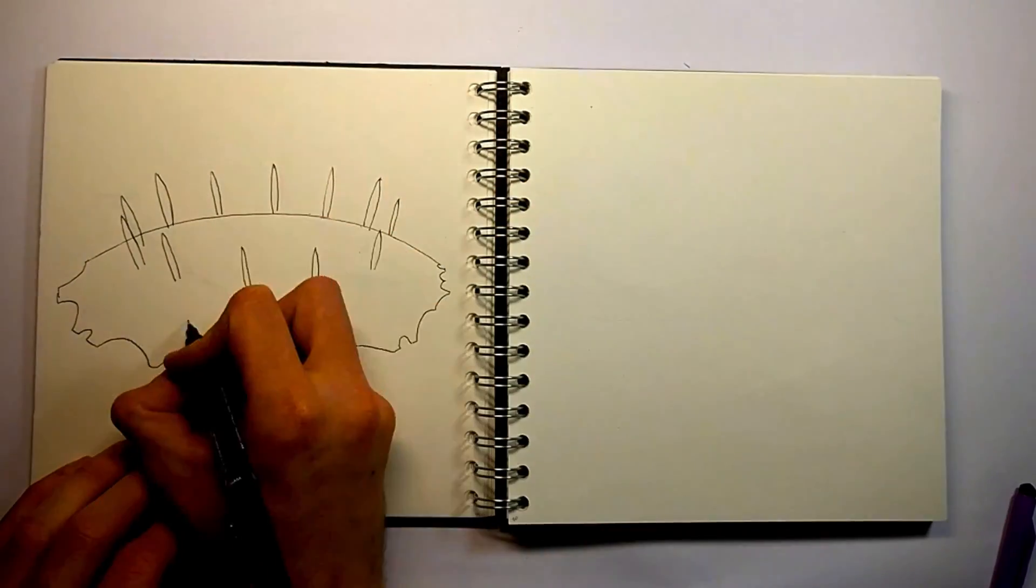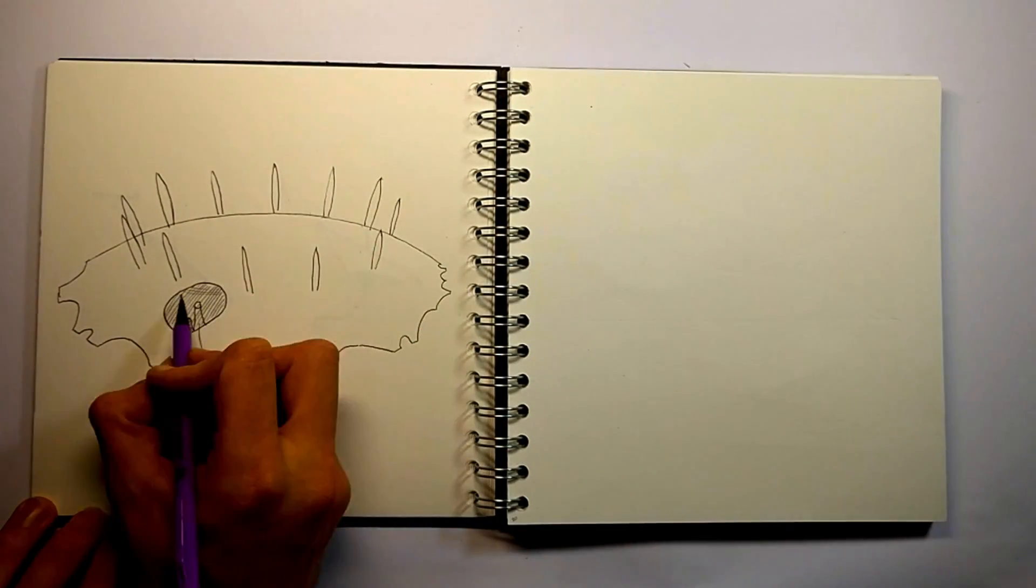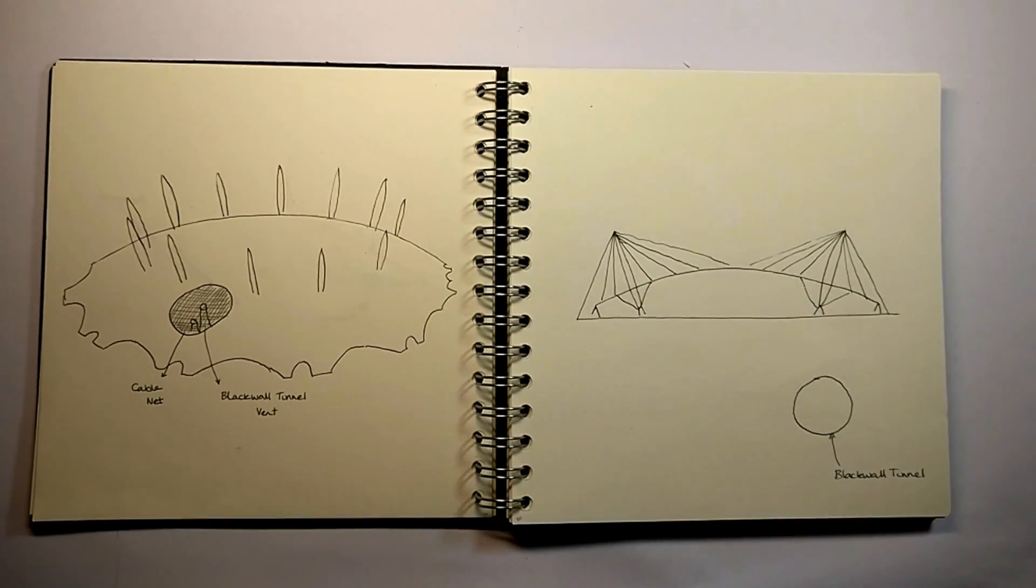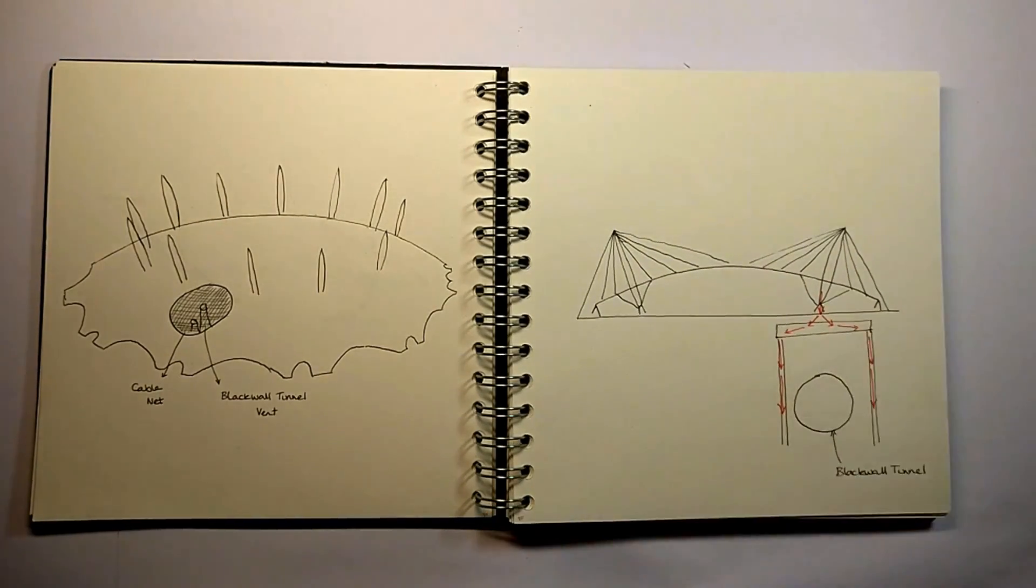Due to the Blackwall tunnel vent, a hole in the roof was needed. This would have created uneven forces in the dome. Instead, the net of cable mimics the roof fabric. The tunnel is bridged over to ensure the masts do not cause any damage to it.